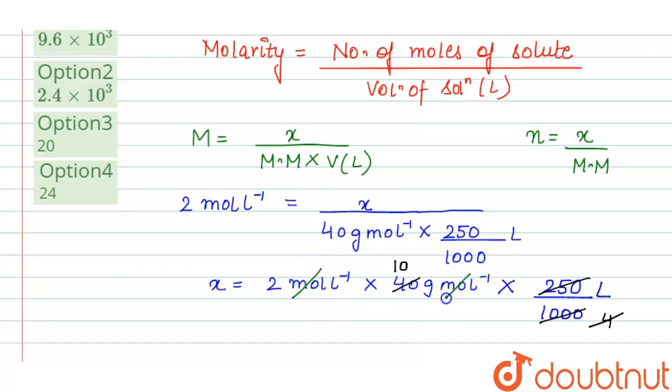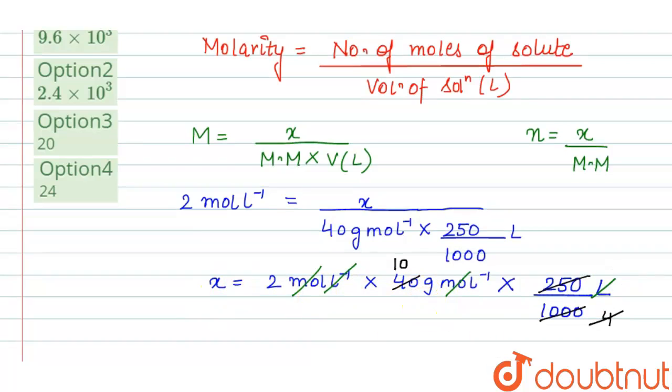...mole to mole will get cancelled out, and liter inverse to liter. So the unit of x, which is the mass of NaOH, will come out to be 20 grams.